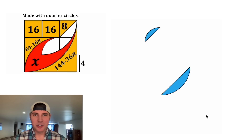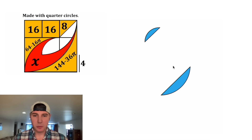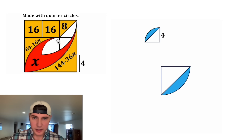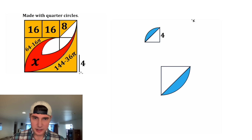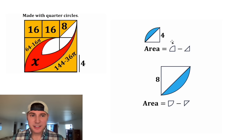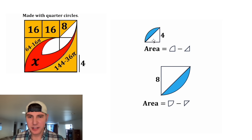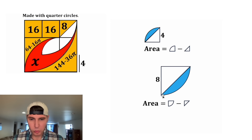Now we just have these two segments. In order to find the area of these segments, we're going to complete the quarter circles. This side length is equal to 4, and then this side length up here is equal to 8. This is how we're going to find the area of the segment: it's the entire quarter circle minus this triangle. And the same thing here — it'll be the whole quarter circle minus this triangle.